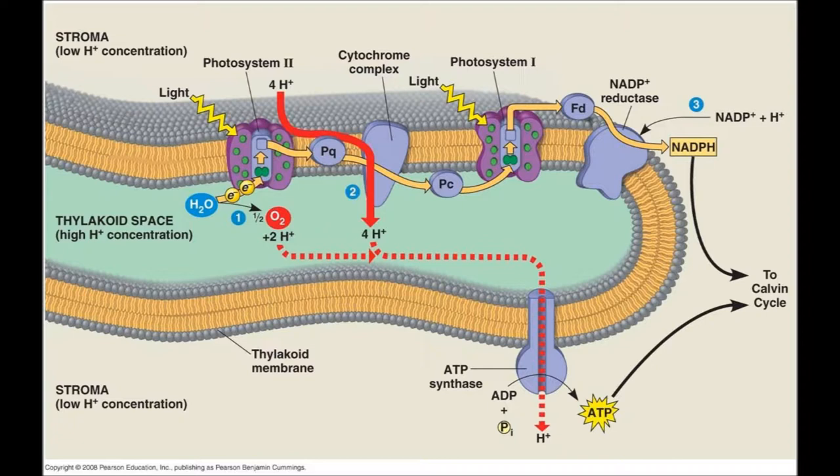The electrons then go through photosystem I, are charged more, and go through the small ETC. They go through the NADP plus reductase and create NADPH. The hydrogen goes through the ATP synthase to create ATP. The ATP and the NADPH now go to the Calvin cycle.